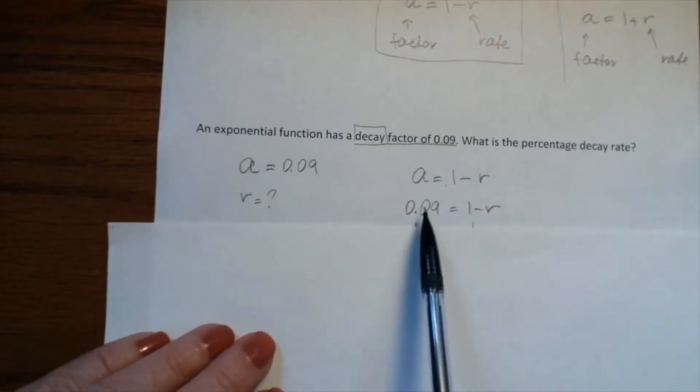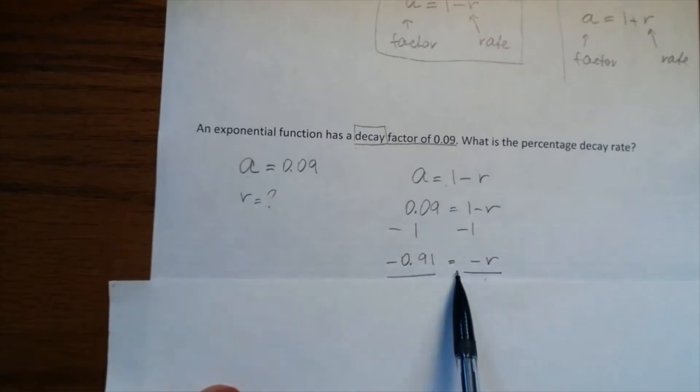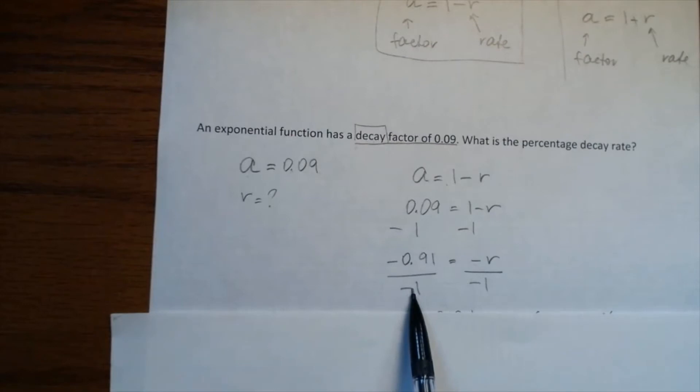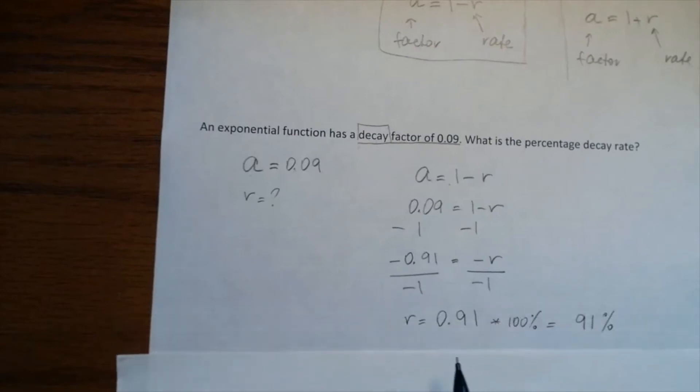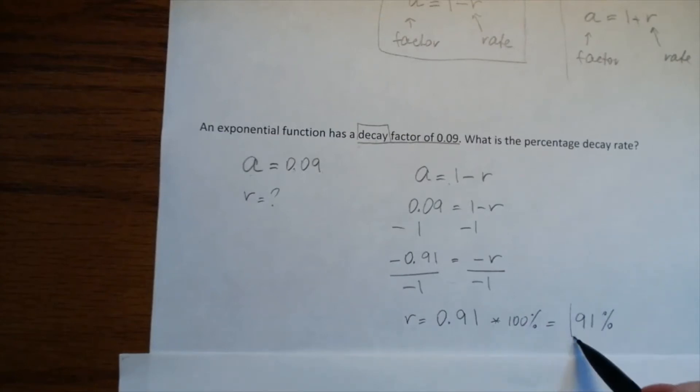Subtract 1 from both sides and divide by -1. So r = 0.91. Multiply this decimal by 100%, and the final answer is 91%.